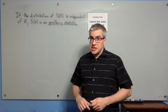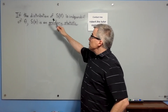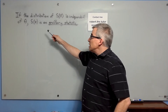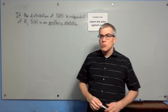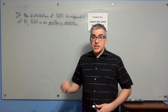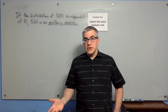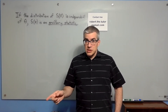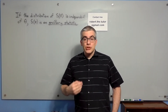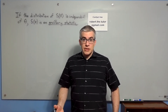Next is ancillary statistic. There are many definitions; one is this: if the distribution of s of x is independent of theta, then s of x is an ancillary statistic. This makes it sound useless — if you're trying to make inferences about theta and your statistic doesn't depend on theta, it won't help you alone. But in conjunction with other statistics that are not ancillary, it can actually add value to your estimate — it can add precision.